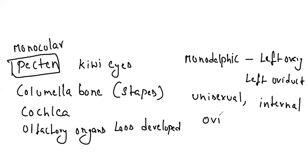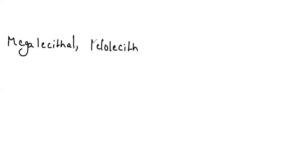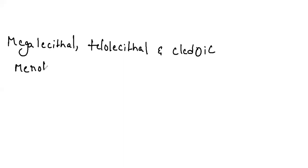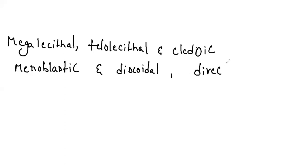Birds are oviparous. Eggs are large — megalecithal (more yolk), telolecithal (polar yolk), and cleidoic (shelled). The shell is perforated and cleavage is meroblastic and discoidal. Embryonic development is direct with no larval stage. Birds are included as amniota.